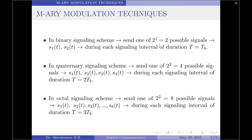Coming to the quaternary signaling scheme: since there are 4 input signals, we will send 1 of 2^2, which is 4 possible signals. Let them be denoted as s1(t), s2(t), s3(t), and s4(t), and this is done during each signaling interval of duration T = 2·Tb. Since we are talking about quaternary signaling, each symbol is of 2-bit length, therefore the symbol duration is 2·Tb.